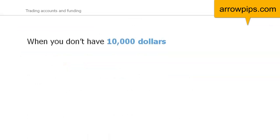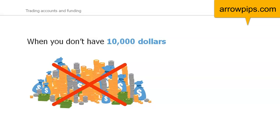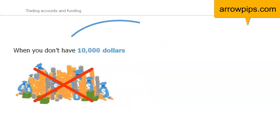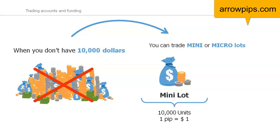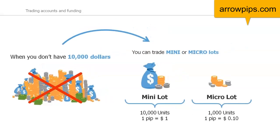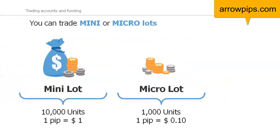There are many people who do not have $10,000, and so brokers are able to offer different position sizes for traders with less capital. Brokers have introduced mini lots, which constitute 10,000 units of the base currency, and micro lots, which constitute just 1,000 units of the base currency. When trading with a mini lot, each pip is worth $1, and when trading with a micro lot, each pip is worth 10 cents.